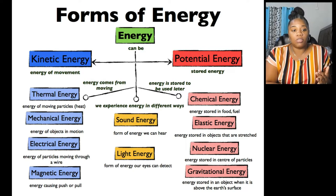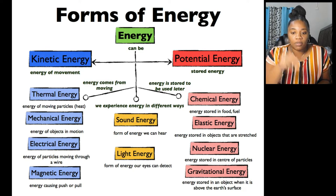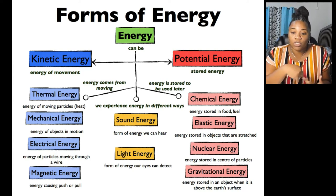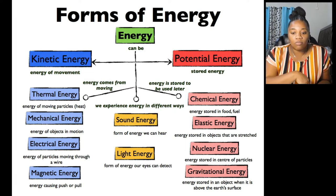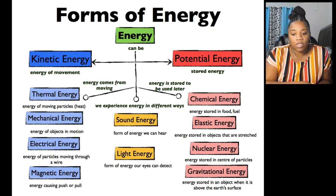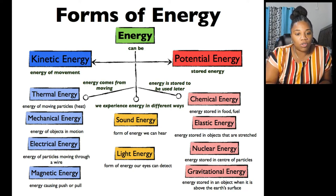Potential energy is known as stored energy — the opposite of kinetic energy. With stored energy, you have four basic types: chemical energy, which is stored in food or fuel; elastic energy, stored in objects that are stretched like rubber bands and springs; nuclear energy, stored inside the nucleus of atoms; and gravitational energy, stored in an object when it is above the Earth's surface.